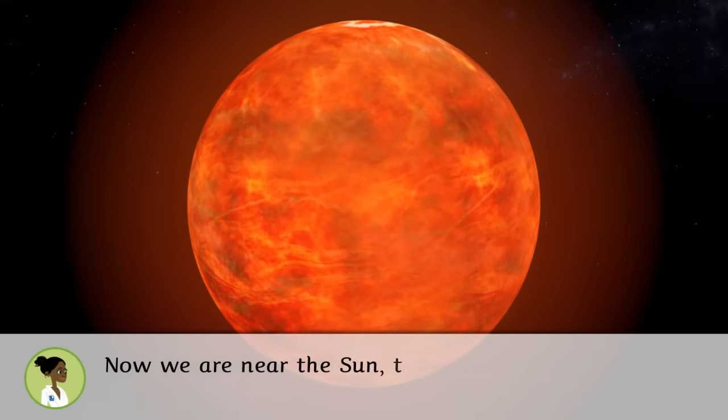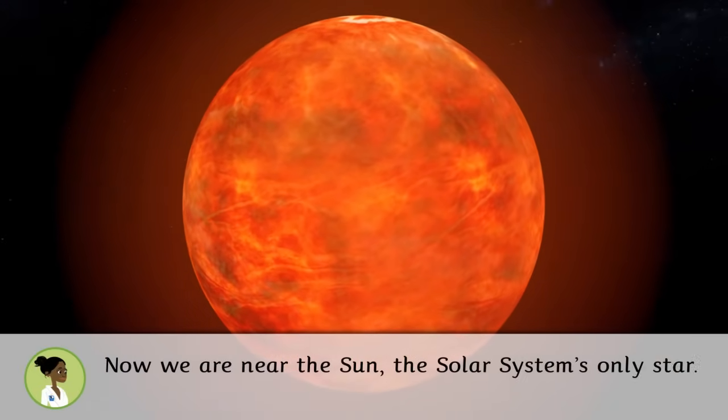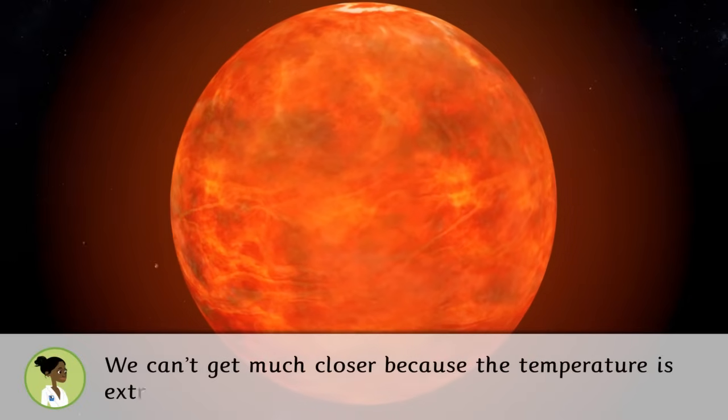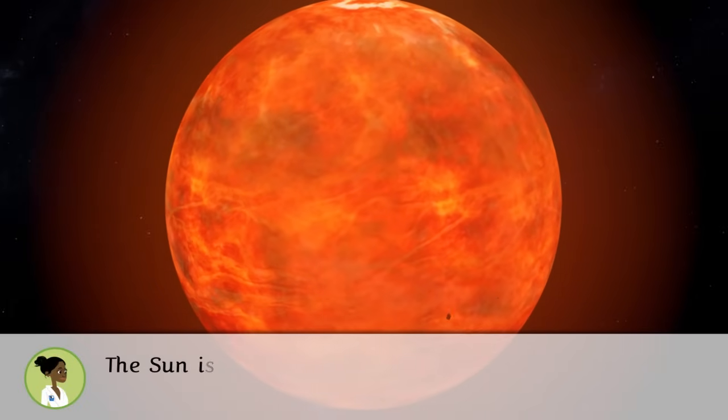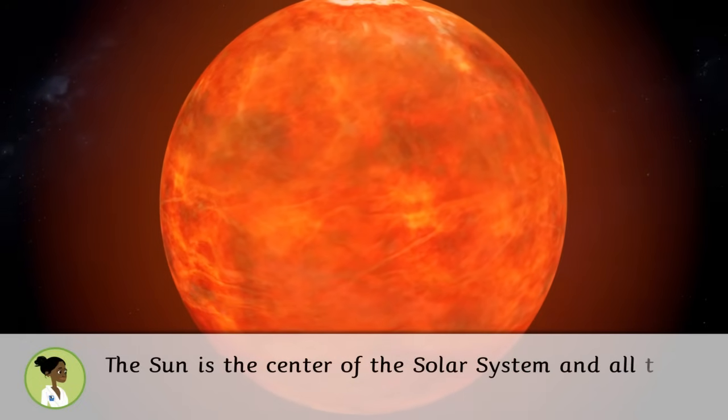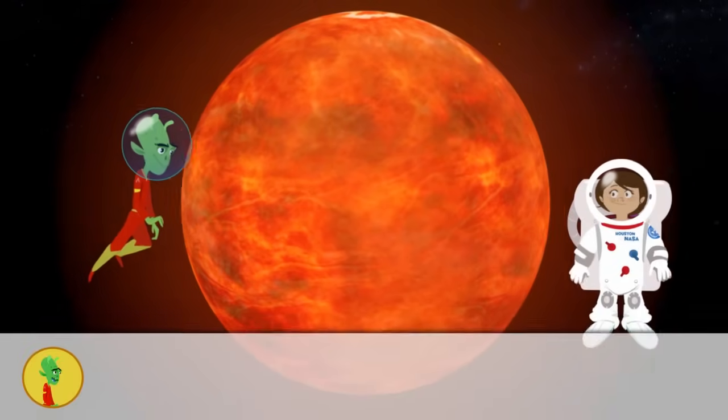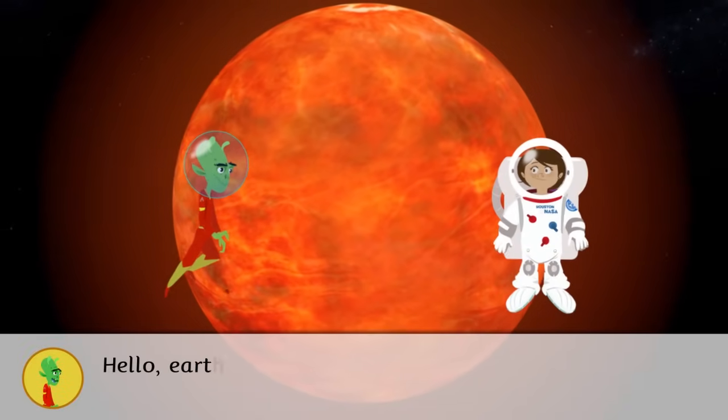Now we are near the Sun, the solar system's only star. We can't get much closer because the temperature is extremely high. The Sun is the center of the solar system and all the planets make their orbit around it.